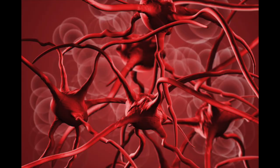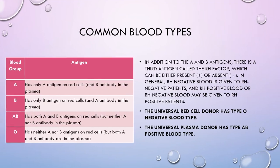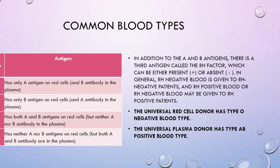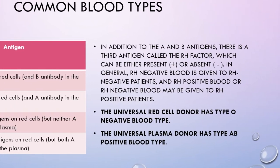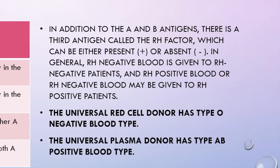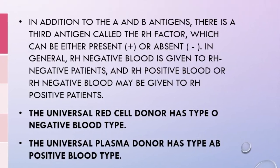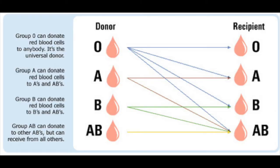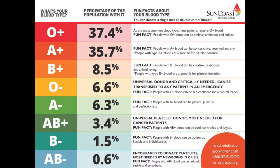Rh negative blood is given to Rh negative patients, and Rh positive blood or Rh negative blood may be given to Rh positive patients. The universal red cell donor has type O negative blood type. The universal plasma donor has type AB positive blood type.